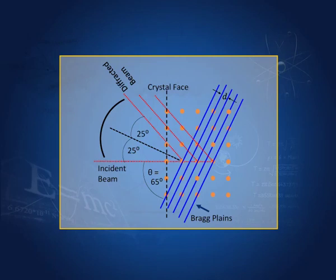Looking at the geometry again: this is the incident beam, this is the refracted beam, this angle is 25 degrees, this angle is 25 degrees. The total angle is 50 degrees and this is the normal to the Bragg planes. Therefore we can draw the Bragg planes and the angle between the incident beam and the Bragg planes is 65 degrees.